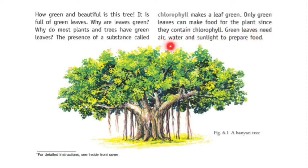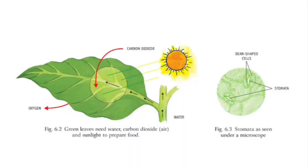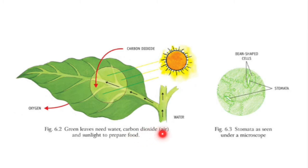Green leaves need air, water, and sunlight to prepare food. This is a diagram of green leaves where green leaves need water, carbon dioxide, and sunlight to prepare food. This is also a magnified image of the leaf where you will find tiny pores called stomata. This can be seen under a microscope.